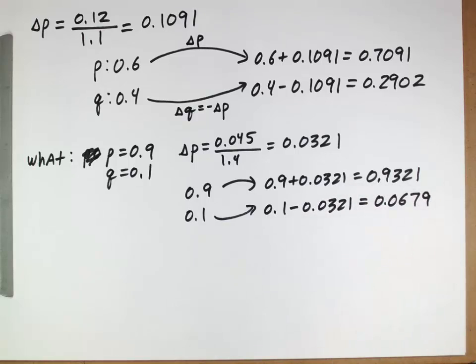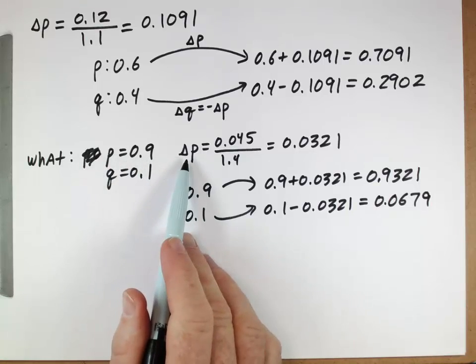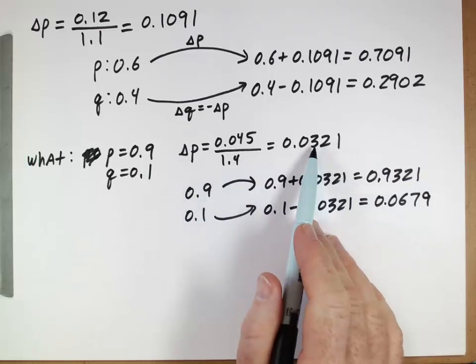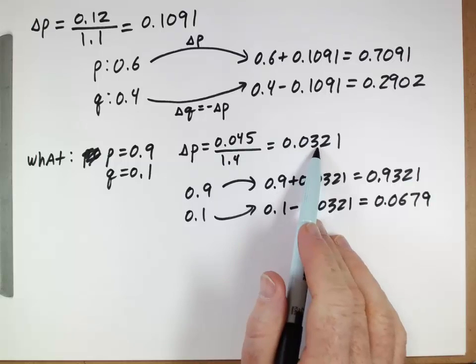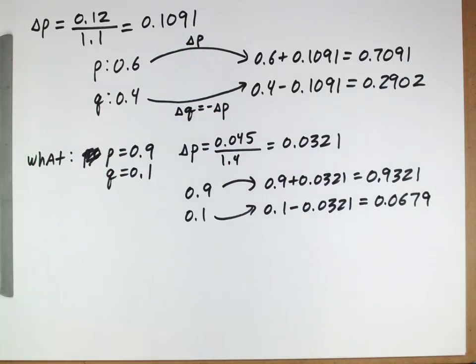And that's interesting. So these are the same fitnesses, but if the frequencies are different, the change in the value of p due to selection is actually much smaller. It's about 3% instead of 11%, even though the fitnesses are the same.